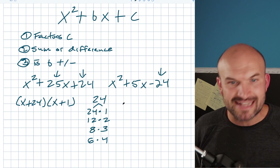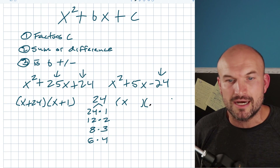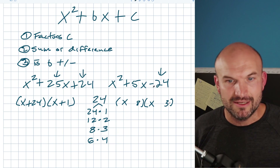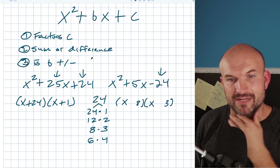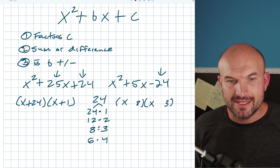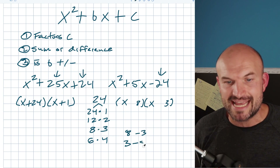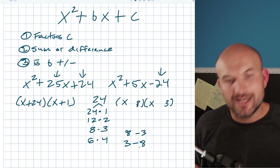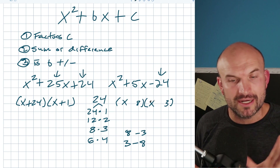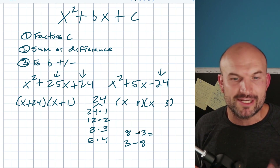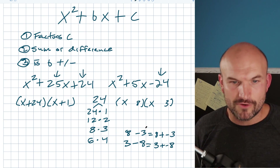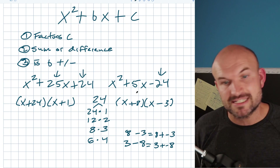Once you've identified the factors with the right difference, write them out as a product of two binomials — all quadratic trinomials factor as a product of two binomials. We have 8 and 3, and B is positive. To get a positive 5 difference, it's 8 minus 3. To help see the signs, rewrite the difference as addition: 8 plus negative 3. So 8 is positive and 3 is negative, giving the factored form of the trinomial.